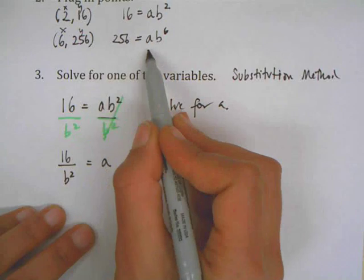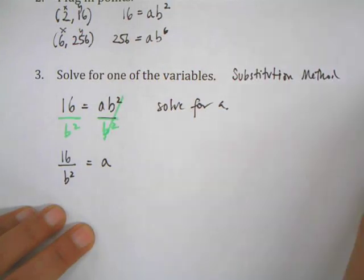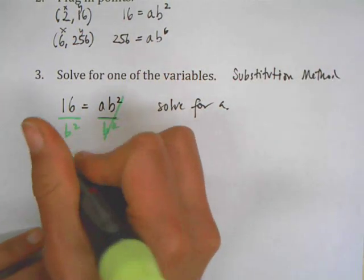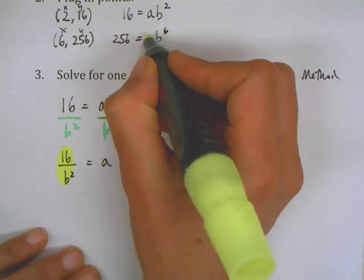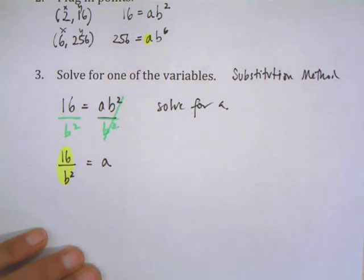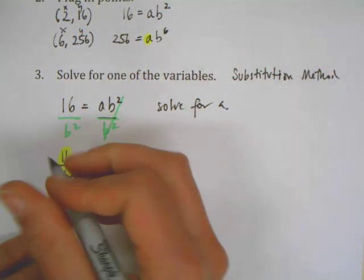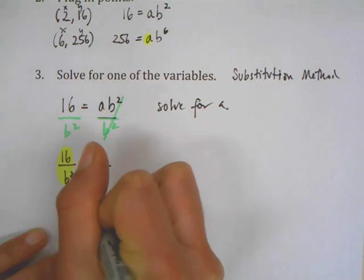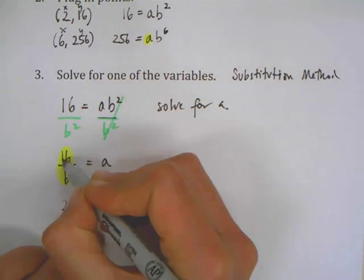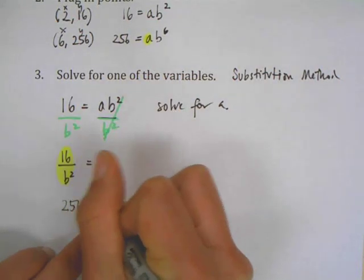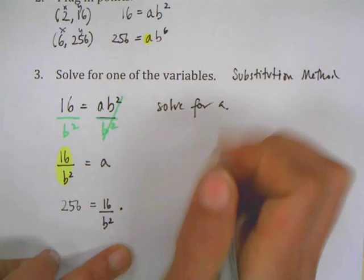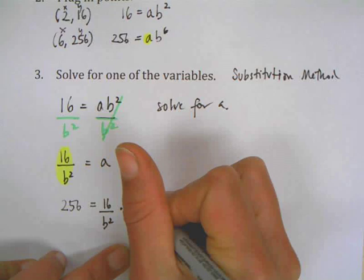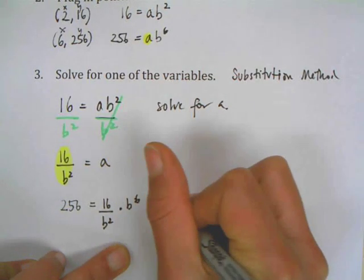I've solved for a, and I have my second equation. I'm going to substitute this amount in for the value of a. So I'm going to rewrite that problem: 256 equals—instead of a, I'm going to write the value of a—16 over b^2 times b to the sixth.